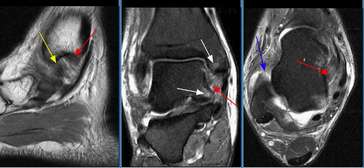The medial or deltoid ligament complex attaches to the apex of the medial malleolus and consists of superficial and deep portions. The superficial part is formed by the tibionavicular, tibiocalcaneal, tibio-spring, and superficial posterior tibiotalar ligaments. The deep part is intraarticular and is formed by the anterior tibiotalar and posterior tibiotalar ligaments.